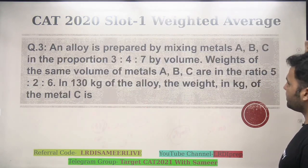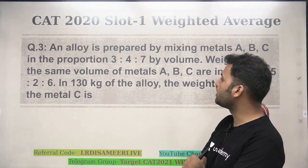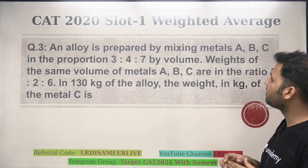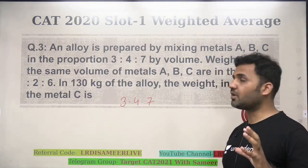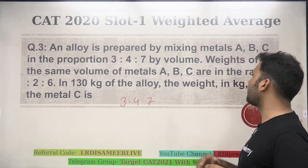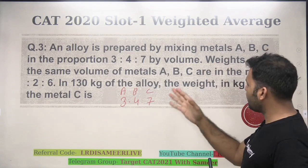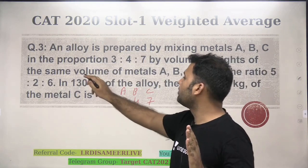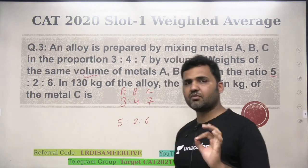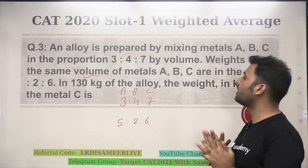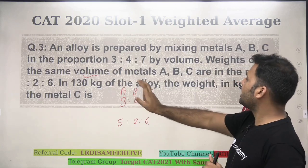Question number 3 — a weighted average or ratios question. An alloy is prepared by mixing metals A, B, and C in the proportion of 3:4:7. This is the quantity ratio. The weight of the same volume of metals A, B, and C is in the ratio of 5:2:6. That means if you take 1 unit of A, 1 unit of B, and 1 unit of C, their weights are in the ratio 5:2:6.